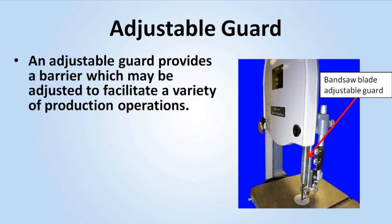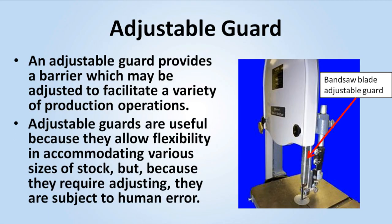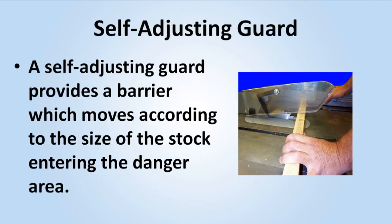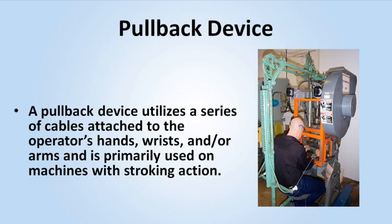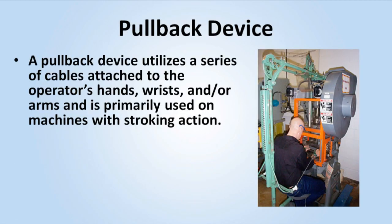An adjustable guard provides a barrier which may be adjusted to facilitate a variety of production operations. Adjustable guards are useful because they allow flexibility in accommodating various sizes of stock, but because they require adjusting, they are subject to human error. A self-adjusting guard provides a barrier which moves according to the size of the stock entering the danger area. A pullback device utilizes a series of cables attached to the operator's hands, wrists, and/or arms, and is primarily used on machines with stroking action.